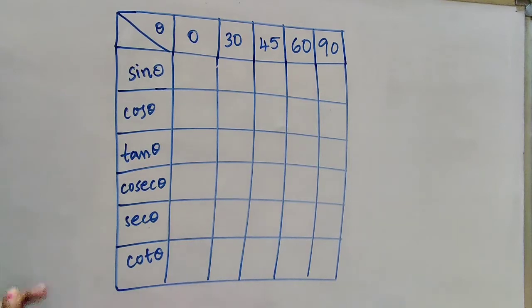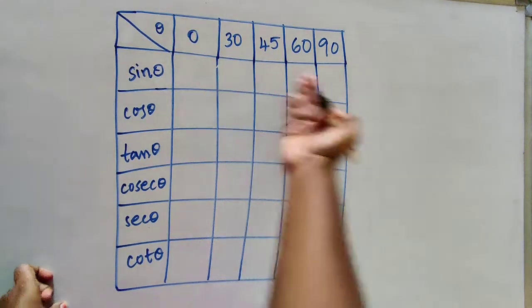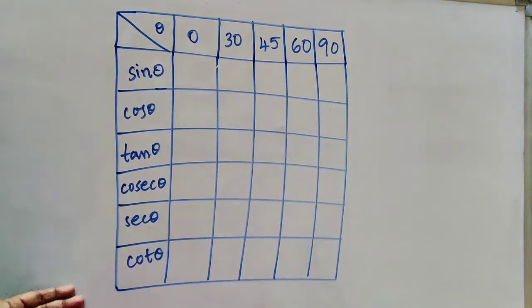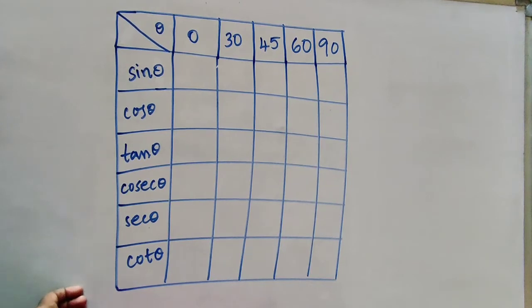So first, rows have angles and columns have sin theta, cos theta, tan theta, cosecant theta, secant theta, and cot theta.